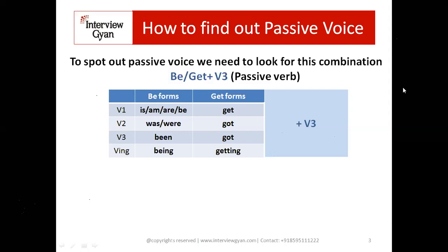Get forms are very easy. The first form is 'get,' the second form is 'got,' the third form is also 'got,' and the -ing form is 'getting.' If you see any one of these forms in a statement and then see a main verb in its third form, that combination is passive voice. Note: third forms of adjectives like 'irritated' or 'disturbed' are not meant here — we are talking about the third form of the action verb. If you see a third form of an action verb preceded by any form of 'be' or 'get,' that combination is passive voice.